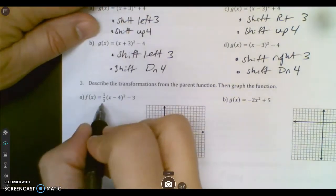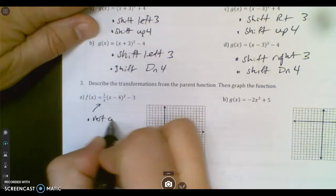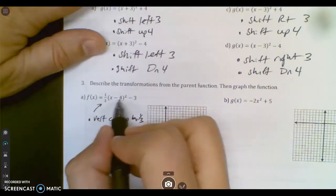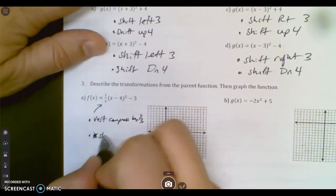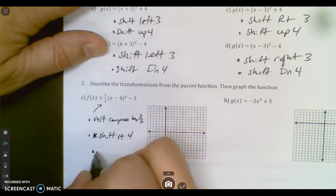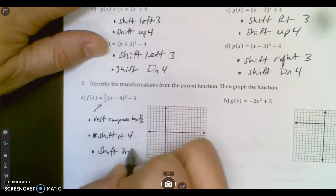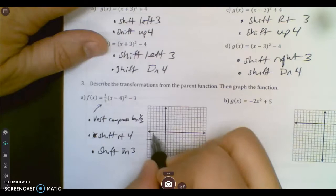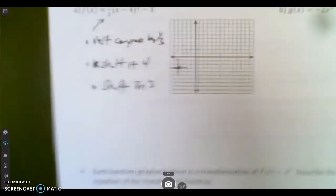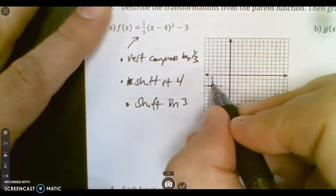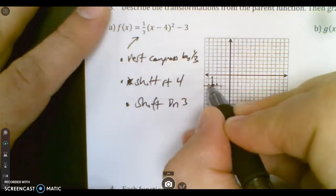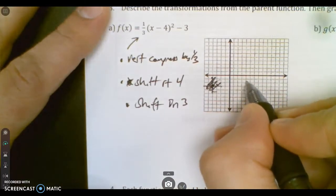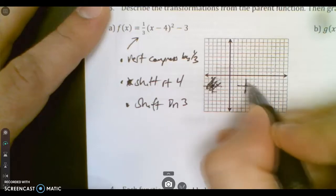Describe the transformations and graph the functions. When I see a one-third there, that would be a vertical compression by one-third. That means all the y values are one-third as high as they usually are. This means x is shift right 4, and then the back thing is shift down 3. So what I do first is I go left 4 and down 3. And this is where my vertex is, and I pretend that's 0, 0. Oh shoot, I said right 4, down 3. Then I did left. My bad.